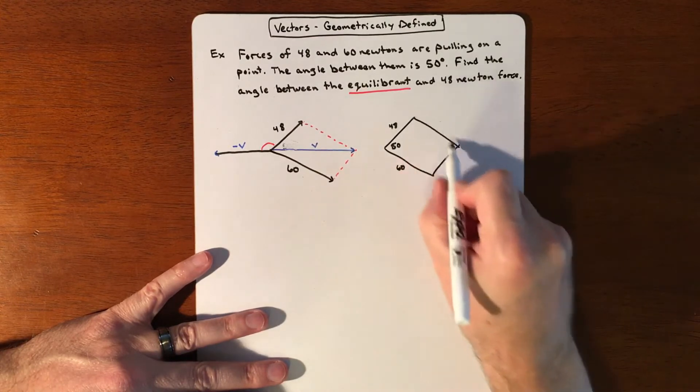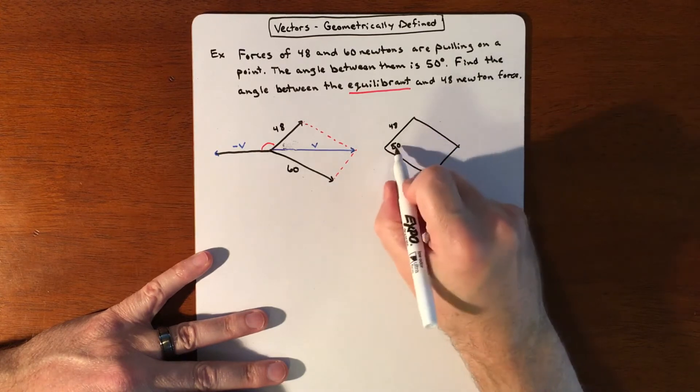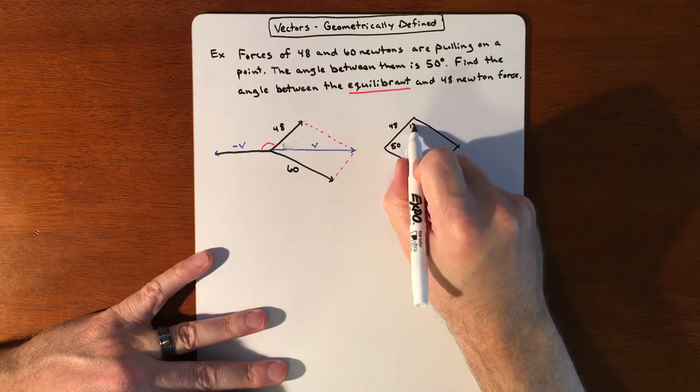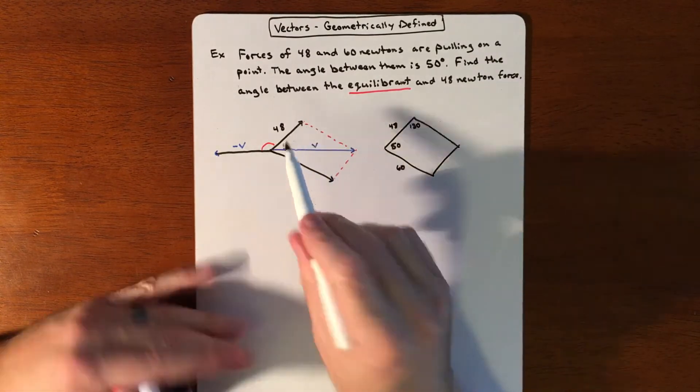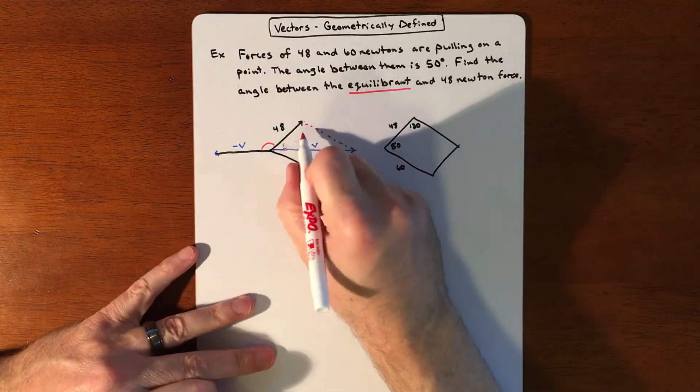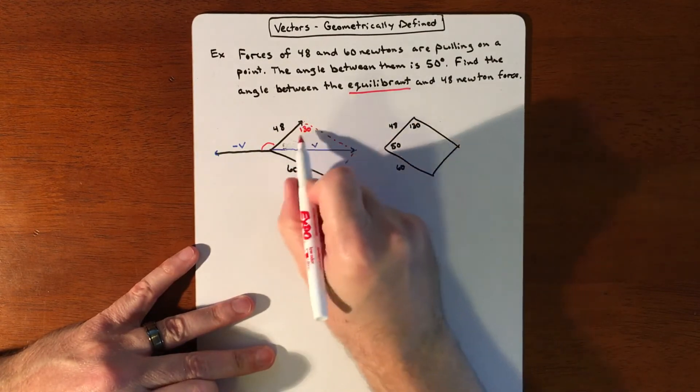Well, if this is 50, and since it's a parallelogram, these two make 180 or these two make 180. So if that's 50, that leaves this at 130, which is actually perfect because if I can label that at 130, and since it's a parallelogram, this is 60.